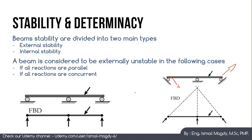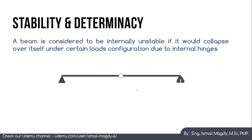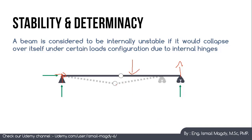Now what about internally unstable beams? Let's check this beam. We have reactions both horizontally and vertically, so it's not like the previous cases. Also, not all reactions are concurrent at the same point. So this beam is not externally unstable. However, if you apply a force here, the beam will start to deflect at the internal hinge, and the roller will start to move laterally. So the beam deforms into an unstable shape — this beam is internally unstable.